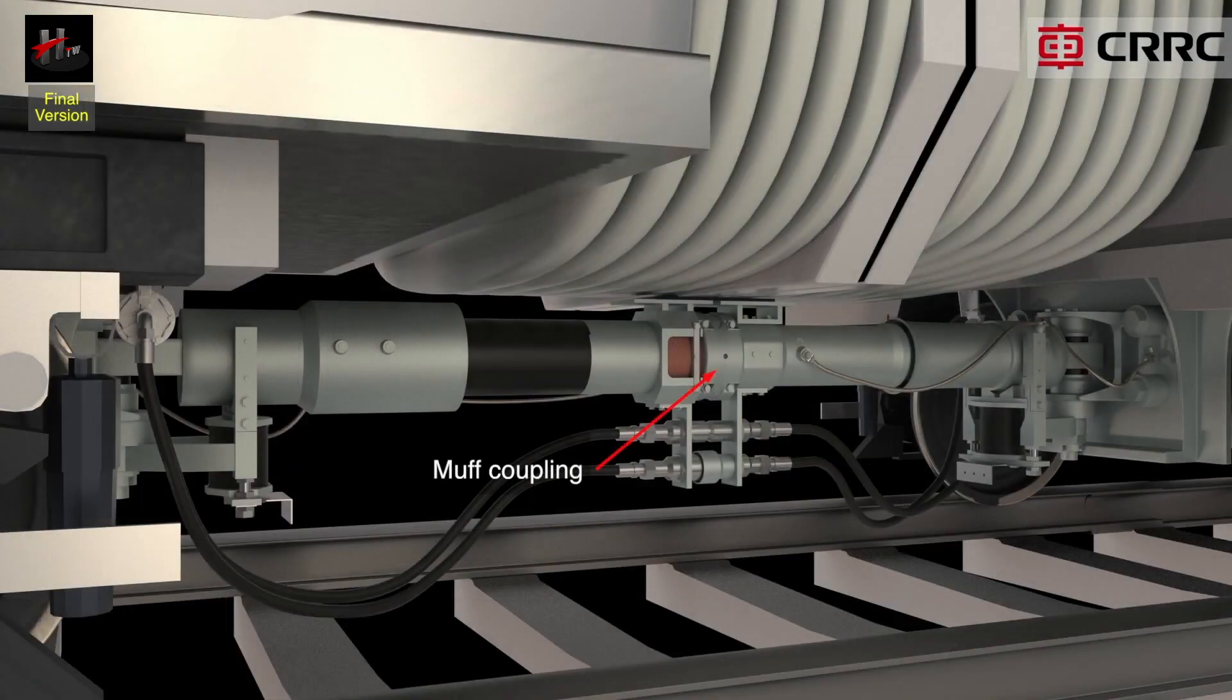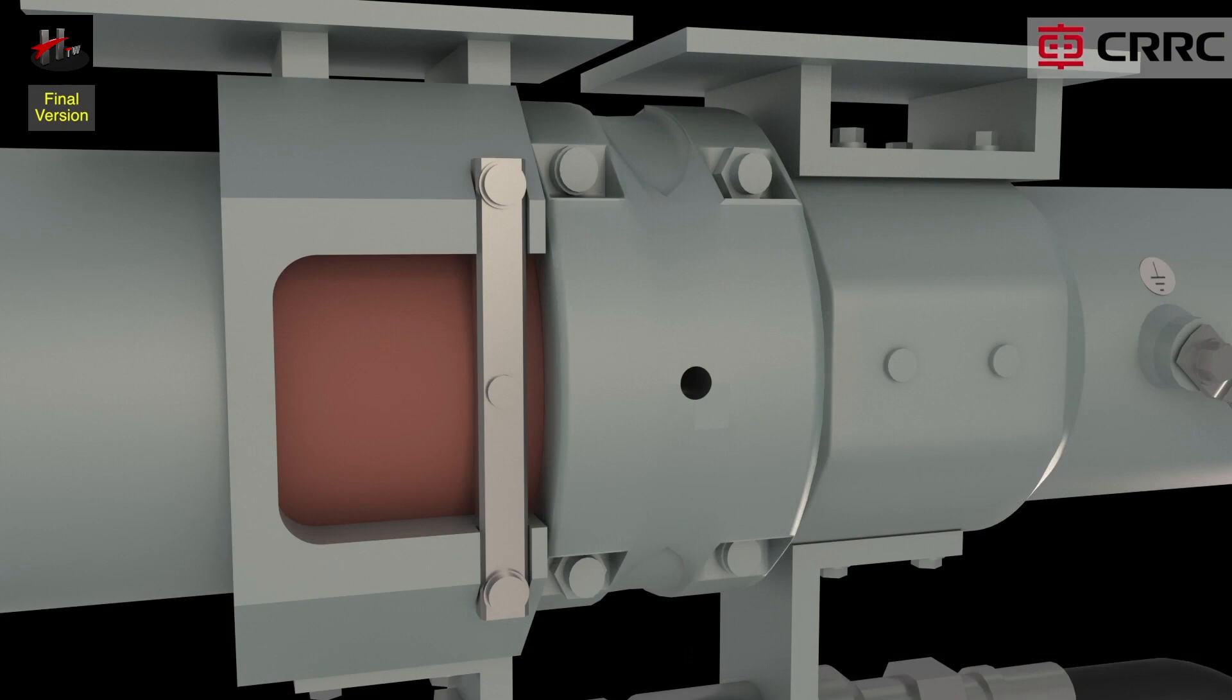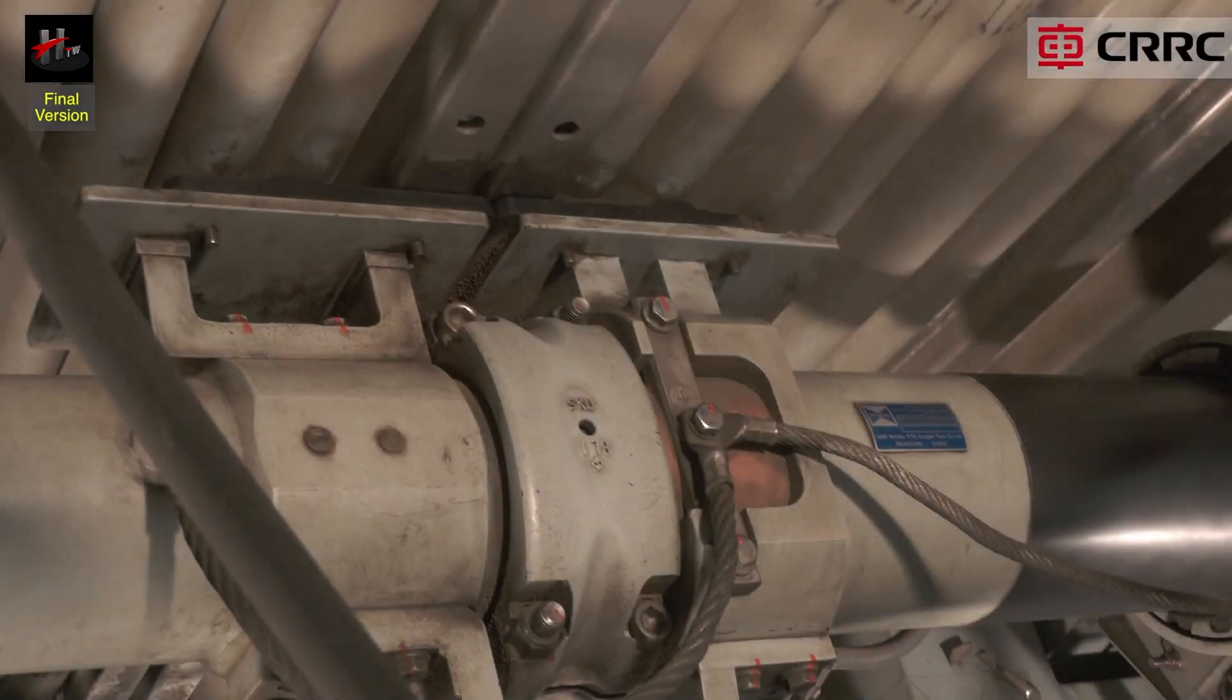The MUF coupling connects the two semi-permanent couplers with each other via a collar called the MUF coupling collar. The connection can be opened wherever required.